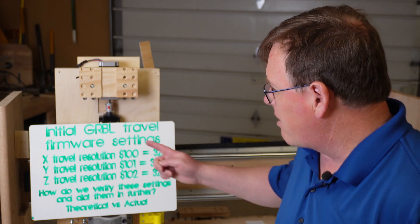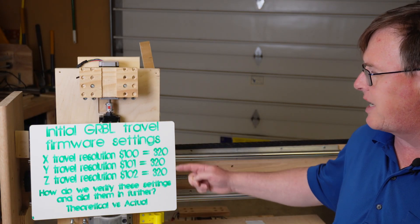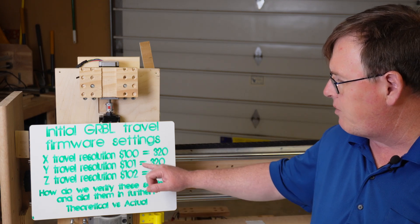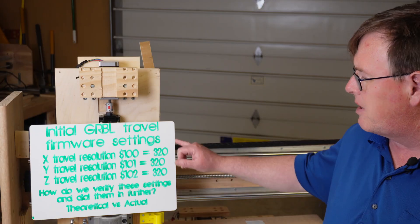So let's start right here with the initial travel firmware settings that we previously set up in another video. I tweaked $100, 101 and 102 to be 320 steps per millimeter.